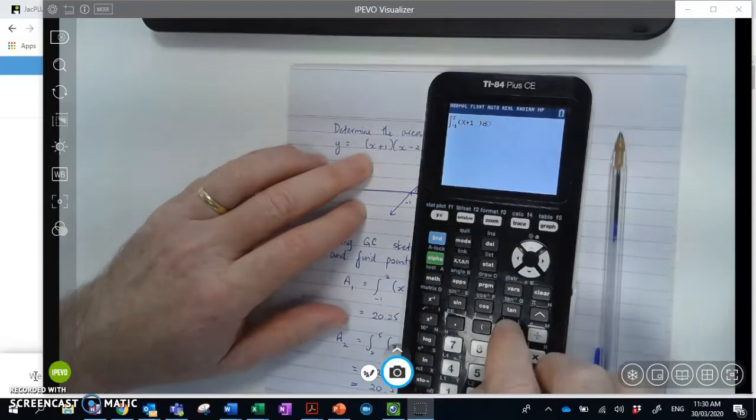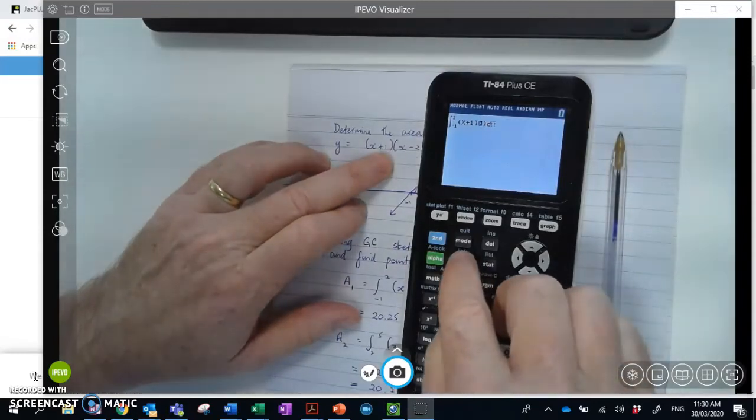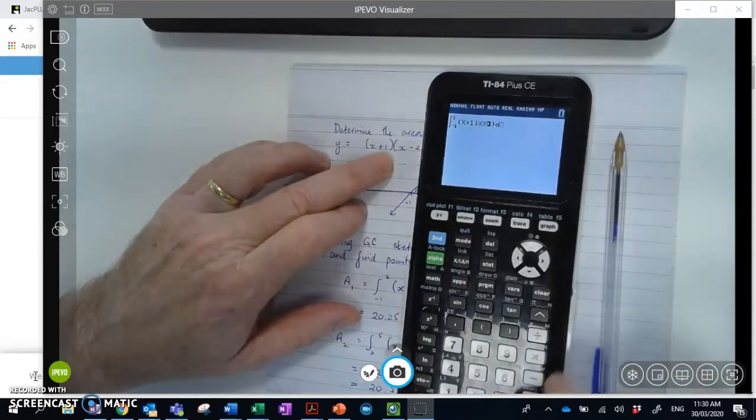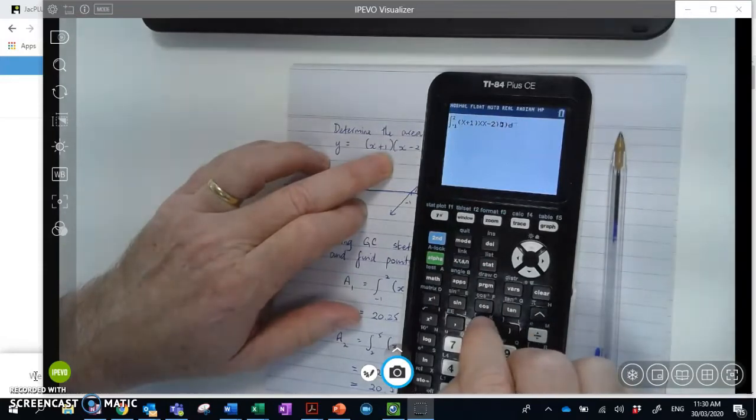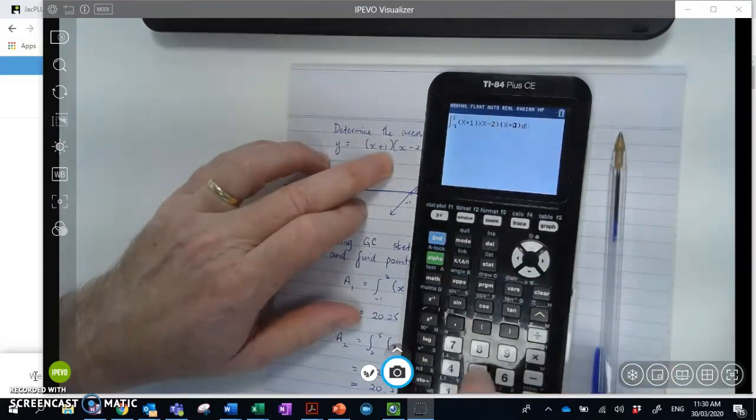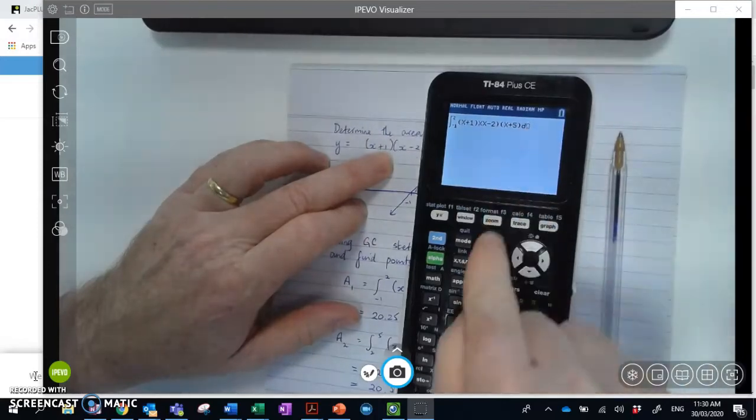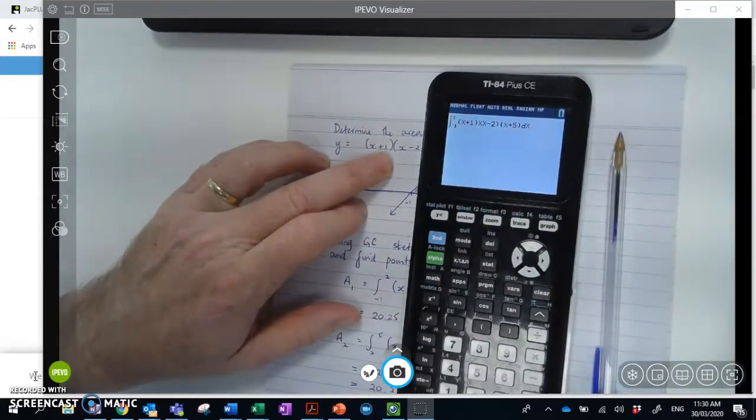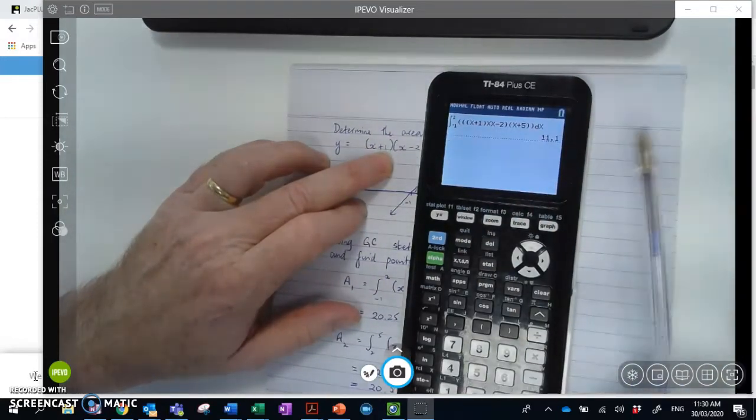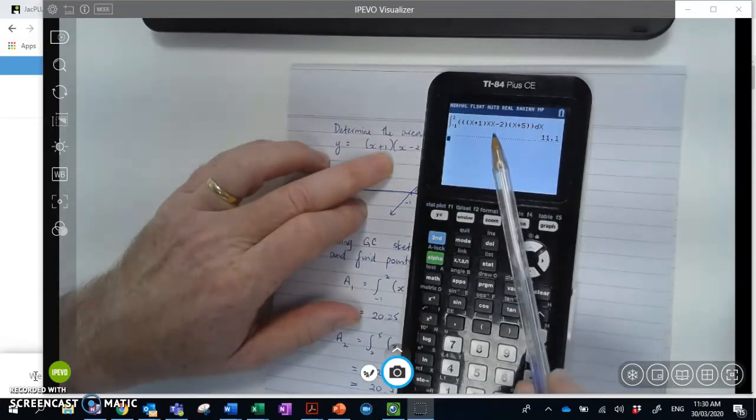and (x+5). And don't forget to put it in with respect to x. So I select there, and then press Enter. And it should have actually calculated that for me. I've made an error there.